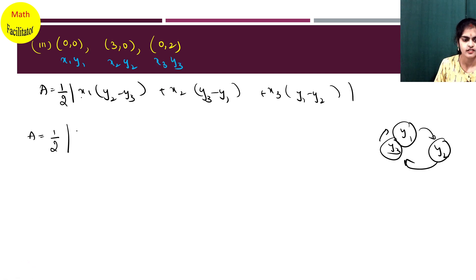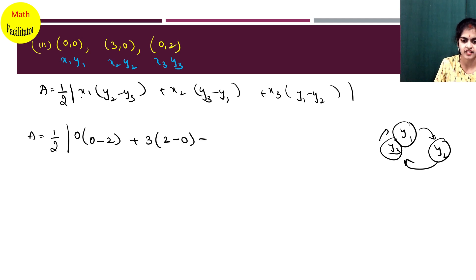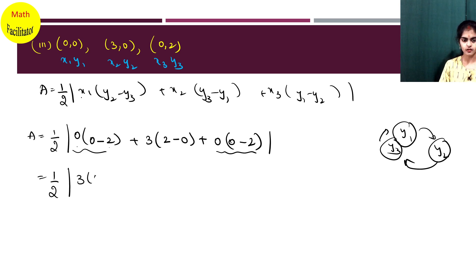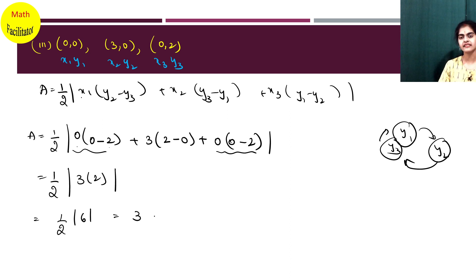Let us substitute in the next example. Area equals half modulus of x1 into (y2 minus y3) — y2 is 0 and y3 is 2; plus x2 into (y3 minus y1); plus x3 into (y1 minus y2) — y1 is 0 and y2 is 2. Here x1 is 0 and x2 is 0, so those terms are 0. Only the remaining term gives 3 into (0 minus 2)... resulting in half into 6 = 3 square units.